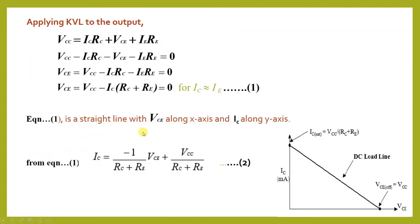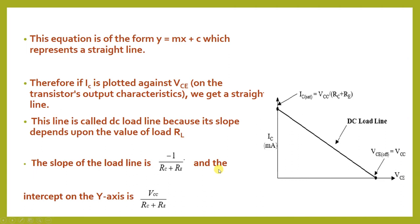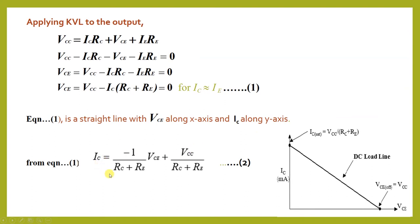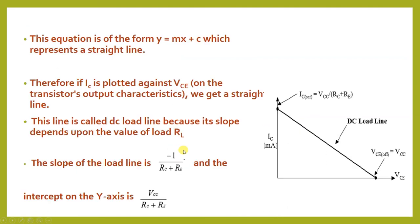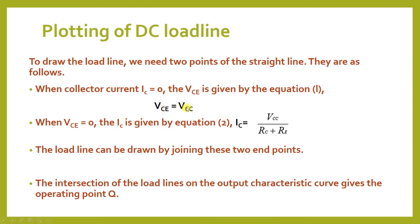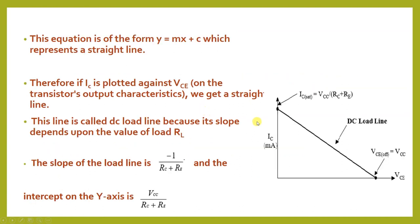When we put VCE = 0, the first term vanishes and we get IC = VCC / (RC + RE). When we put IC = 0, since the denominator is the same, VCC = VCE, so VCE = VCC. Thus we obtain two points — one with respect to the Y-axis and another with respect to the X-axis.